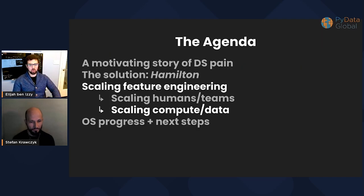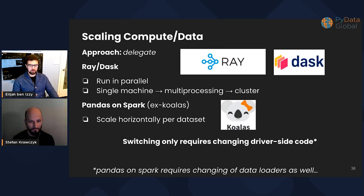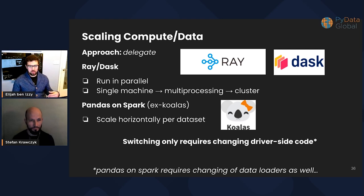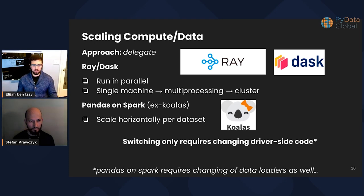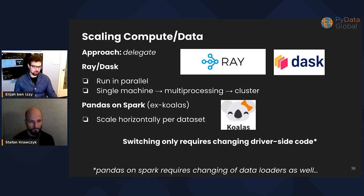How does Hamilton help you scale the compute and data aspect? The approach is to delegate. We have three frameworks to discuss today — and we're always adding more. Ray and Dask can help you run in parallel and scale from a single machine to multiprocessing to a cluster, great for lots of different computations you want to offload. We also support Pandas on Spark — previously called Koalas — which allows you to scale horizontally per dataset when data is bigger than memory. The key point: switching almost always only requires changing driver-side code. That's a function of decoupling the functions from the driver. Slight caveat: Pandas on Spark also requires changing one small set of functions.